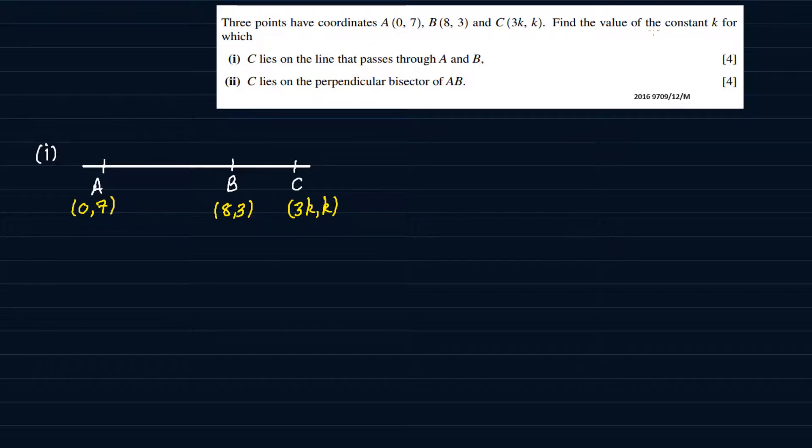Now, they want us to find the value of K for which C lies on the line. The concept that I'm going to use here is that since A, B, and C are on the same line, or in other words, they are collinear, if I use any of the two points to find gradient of this line, then we should get the same value of the gradient. So we are saying that the gradient of the line AB should be equal to the gradient of BC.